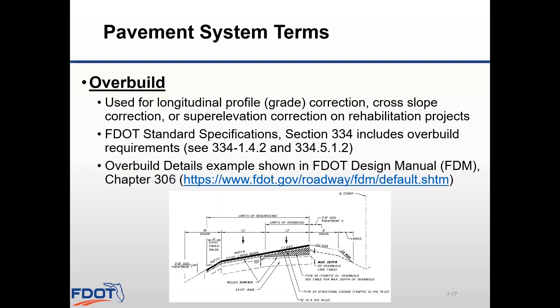Section 334-5.1.2 of the standard specifications tells us that density testing is not required for overbuild courses. The limits and quantities of overbuild will need to be detailed in the roadway plan set, and Chapter 306 of the FDOT Design Manual provides one example of how this may be shown and quantified.